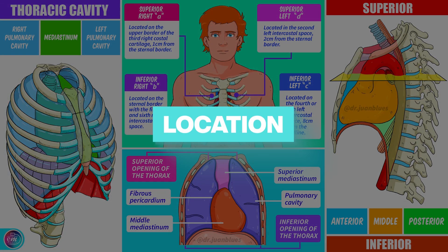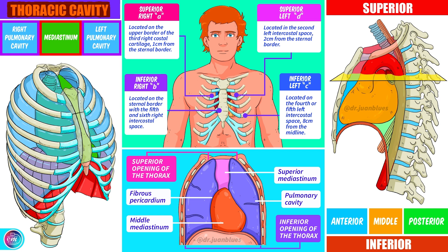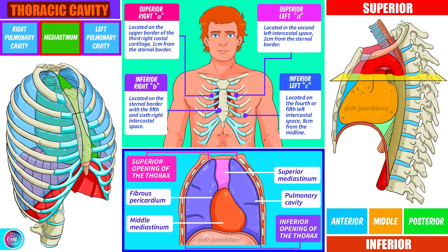Where is the heart located? The heart is set in the thoracic cavity, or chest cavity, in a place known as the mediastinum. This is a space located between the two pulmonary cavities — the right pulmonary cavity and the left pulmonary cavity. We should mention that the mediastinum has divisions, and that our main organ, the heart, is located specifically in the middle mediastinum.